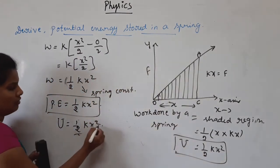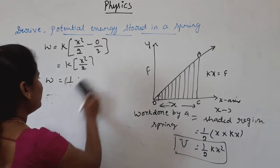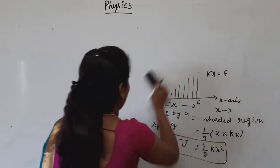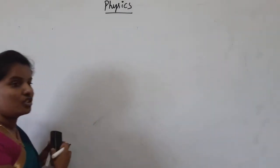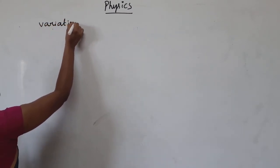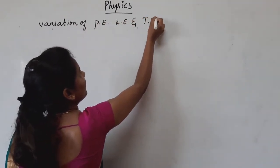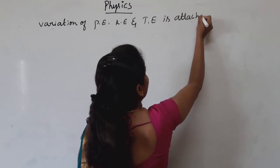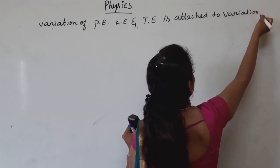Now we look at the variation of potential energy, kinetic energy, and total energy for a body attached to a spring.